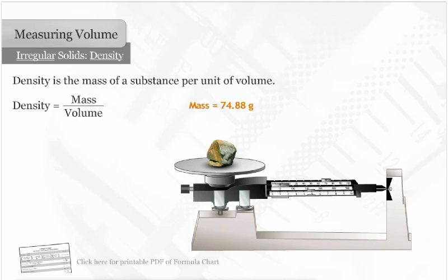Since we know that the volume of this rock is 31 and 2 tenths milliliters and the mass is 74 and 88 hundredths grams, we can calculate its density. When we divide the mass by the volume, we arrive at 2 and 4 tenths grams per milliliter as the density.